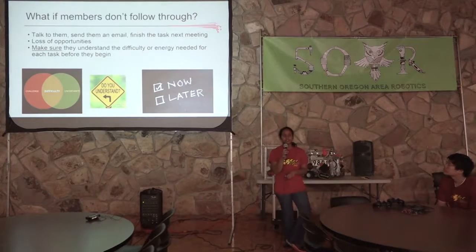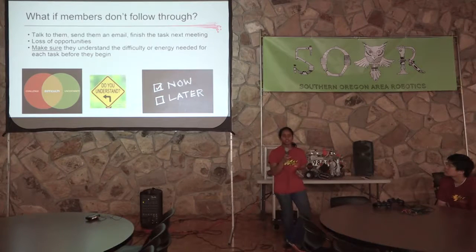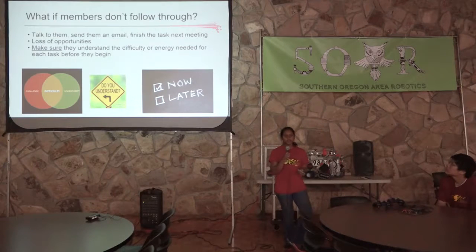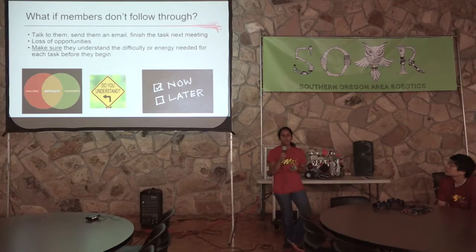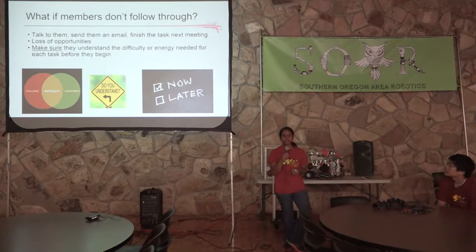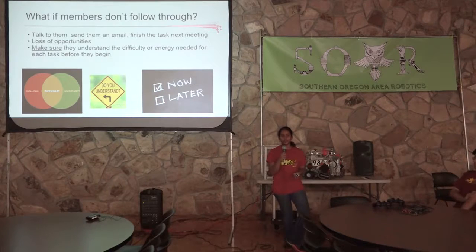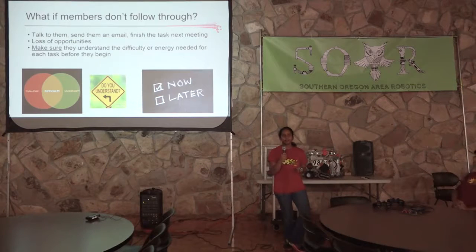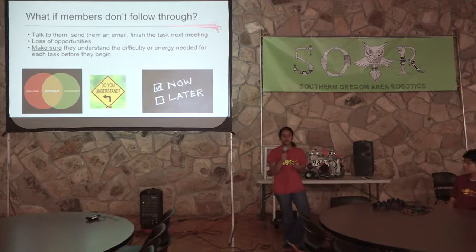There's also the question of what to do if team members don't follow through. The first thing is to send them a quick email, phone call, or text — usually a simple reminder is enough. If that doesn't work, make sure at the next meeting they complete the previous task before starting another. When a member starts a task, make sure they understand how much effort it takes. If tasks are consistently not being done, the members who complete their tasks on time and go above and beyond will have more opportunities.